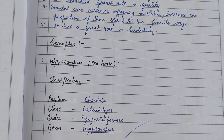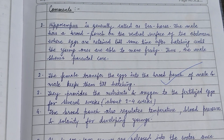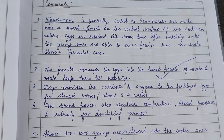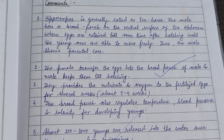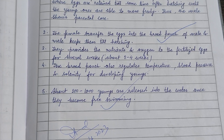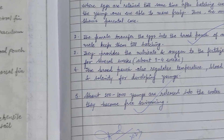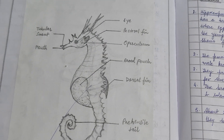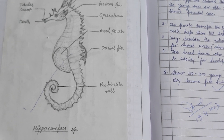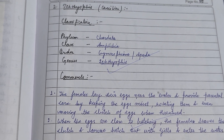First, we will see the hippocampus, that is the seahorse. In seahorse, there is a pouch-like structure known as a brood pouch, in which eggs are retained until sometime after hatching and the young ones are able to move freely. The female transfers the eggs into the male brood pouch and the development process occurs in the brood chamber. Here is a figure of the hippocampus, that is the seahorse.